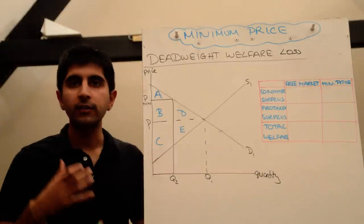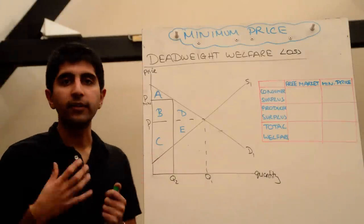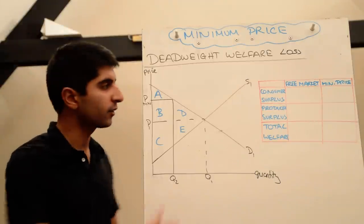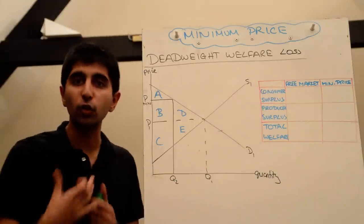In this video I want us to understand why there is a deadweight loss caused and to do so we need to isolate surplus effects, consumer and producer surplus, in the normal way.